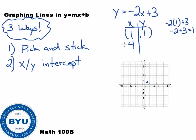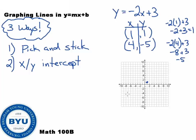Now I'm going to stick in 4: negative 2 times 4 is negative 8, plus 3 comes out to negative 5. So the point 4, negative 5 is what I need to graph — right here. And my line would look like that.